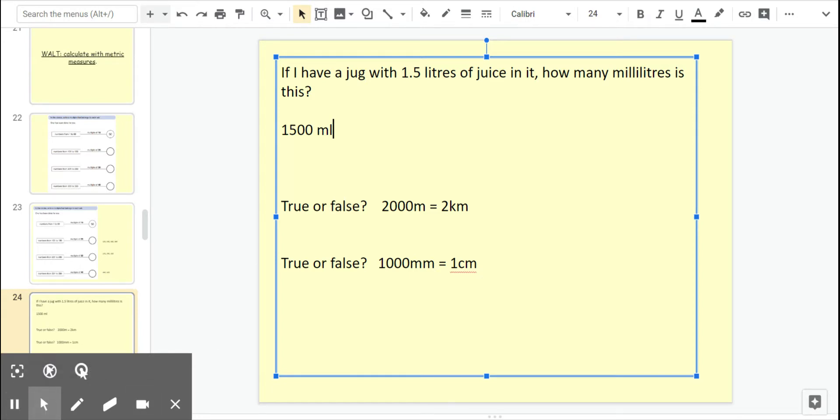Okay, next question. True or false: 2000 meters equals 2 kilometers. We know that there are 1000 meters in one kilometer, so that must mean if there's 2000 meters, that would be 2 kilometers, so that is true. This one, we know that there are 10 millimeters in one centimeter, so if we're converting millimeters to centimeters we need to divide by 10. Have they divided by 10? I don't think they have. What would the right answer be? The right answer would be 100 centimeters.